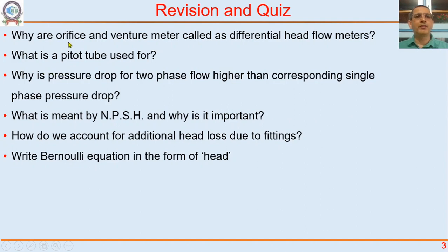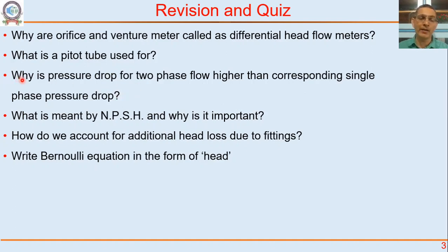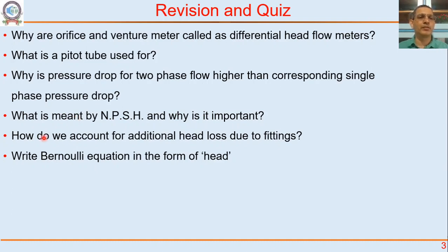Just before we do that, a quick revision so that all these concepts are very clear. Why are orifice meters and venturi meters called differential head flow meters? What is a pitot tube used for? Why is pressure drop for two-phase flow higher than the corresponding single-phase pressure drop? What is meant by NPSH? NPSH stands for net positive suction head — why is it important? How do we account for additional head loss due to fittings in piping?